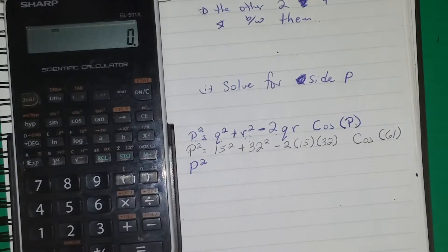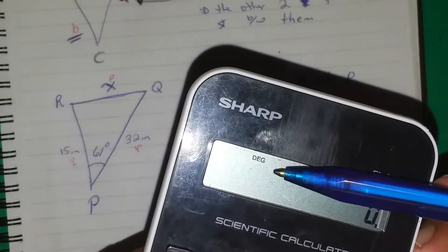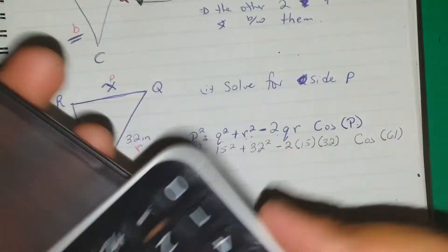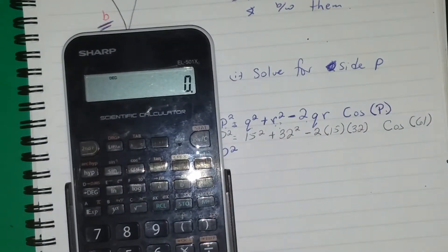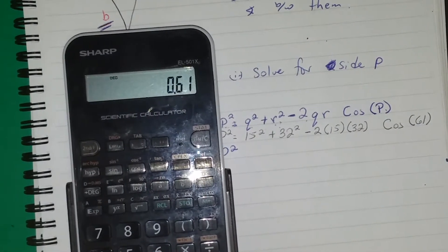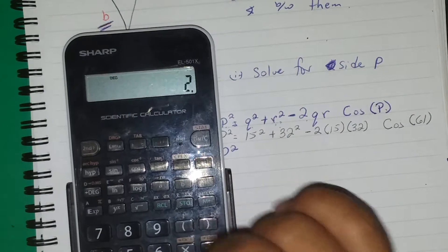First, make sure your calculator is in degrees mode. You should see 'DEG' or just 'D' on the display. Some calculators have a reset button at the back. For a basic calculator without a full display, enter from the back of the expression: cosine of 61, then times 32, times 15, times negative 2.